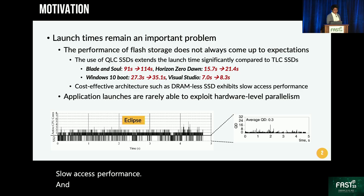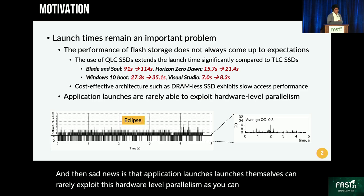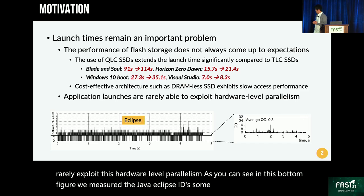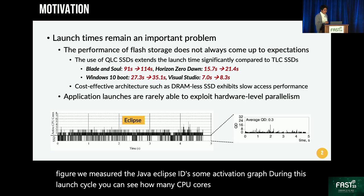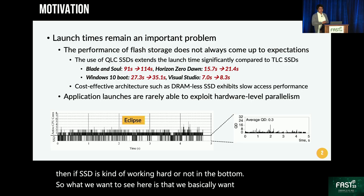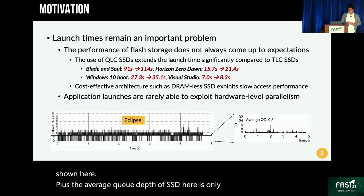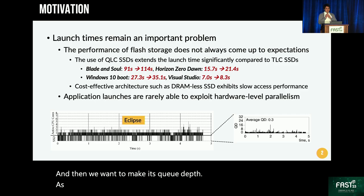Sadly, application launches themselves can rarely exploit this hardware-level parallelism, as you can see in this bottom figure. We measured the Java Eclipse IDE's activation graph during the launch cycle — you can see how many CPU cores are activated at the top and whether the SSD is working hard in the bottom. We basically want many CPU cores and the SSD running simultaneously. Unfortunately, that's not the case here. The average QDAP of the SSD is only 0.3, and we want to make it as large as possible so the SSD works harder rather than being idle.